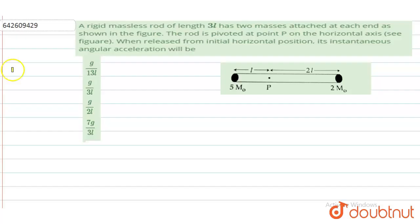Hello, the question is: a rigid massless rod of length 3L has two masses attached at each end as shown in the figure. The rod is pivoted at point P on the horizontal axis. When it is released from the initial horizontal position, its instantaneous angular acceleration will be.